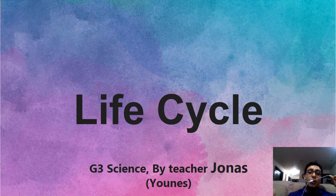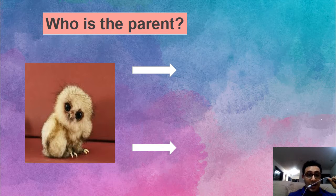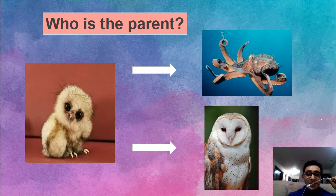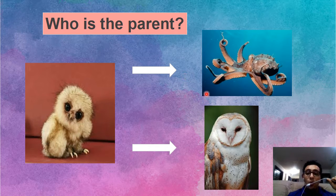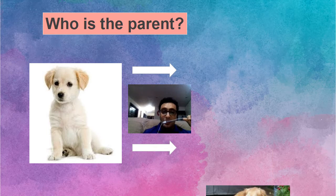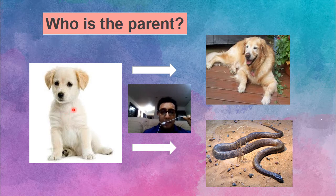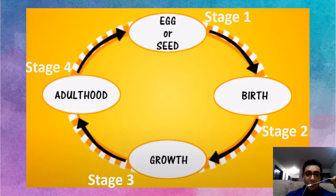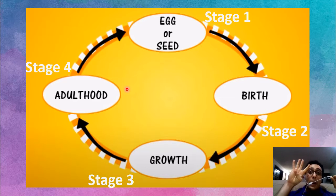We also learned about life cycle. As you remember, it's very easy to know which one the parent is because we know the life cycle — we know what an owl looks like as a baby, or that a puppy grows into a dog. Life cycle has four main stages.